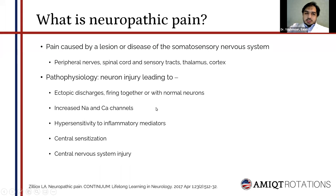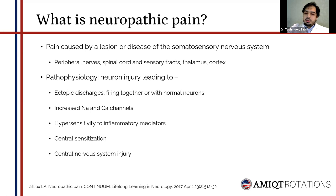What is the pathophysiology — what happens on the microscopic level? Neuron injury leads to several things, including ectopic discharges, meaning neurons can fire independently and propagate discharges to other neurons including normal ones. Injured neurons also tend to have more sodium and calcium channels, which leads to more excitability and neurotransmitter release. They are also hypersensitive to inflammatory mediators like TNF and interleukins.